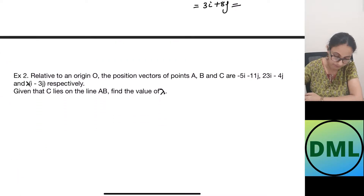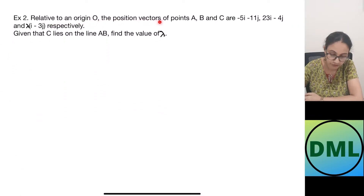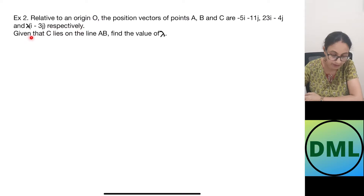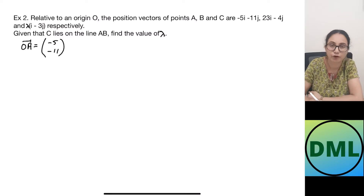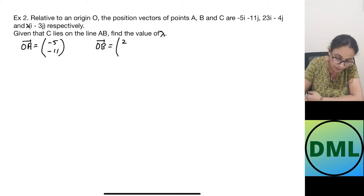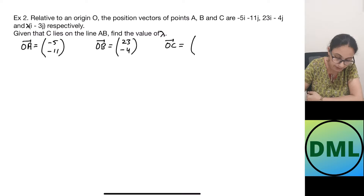Let us do one more question. Relative to an origin O, the position vectors of points A, B and C are minus 5i minus 11j, 23i minus 4j, and lambda times i minus 3j respectively. Given that C lies on the line AB, find the value of lambda. The position vector of A is (−5, −11), of B is (23, −4), and of C is (lambda, −3lambda) in column vector form.